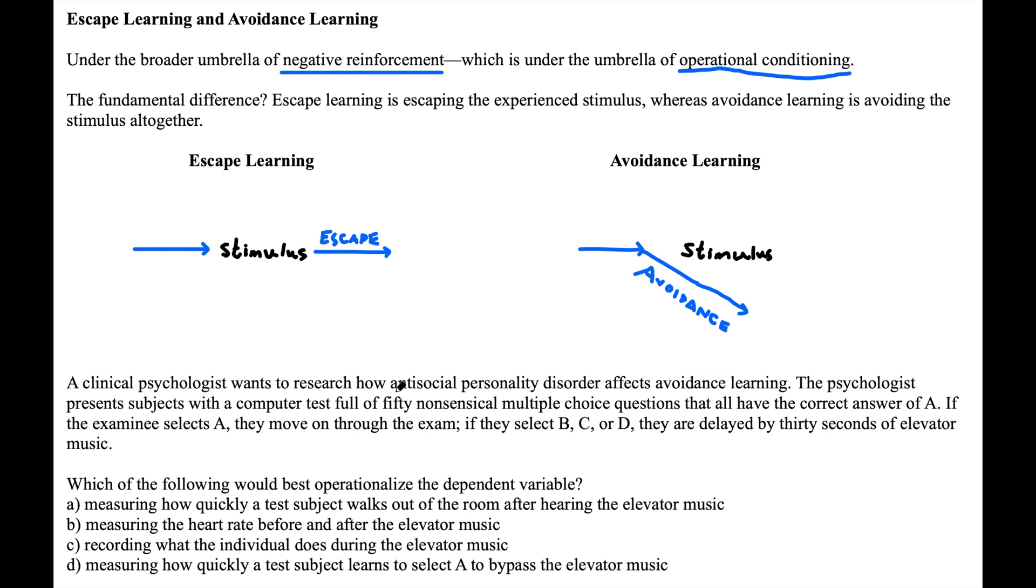And we're looking at how our independent variable, antisocial personality disorder, affects our dependent variable, avoidance learning. So really we're looking at how to operationalize or quantify avoidance learning. So I'll give you a little bit of time to read through these questions here.